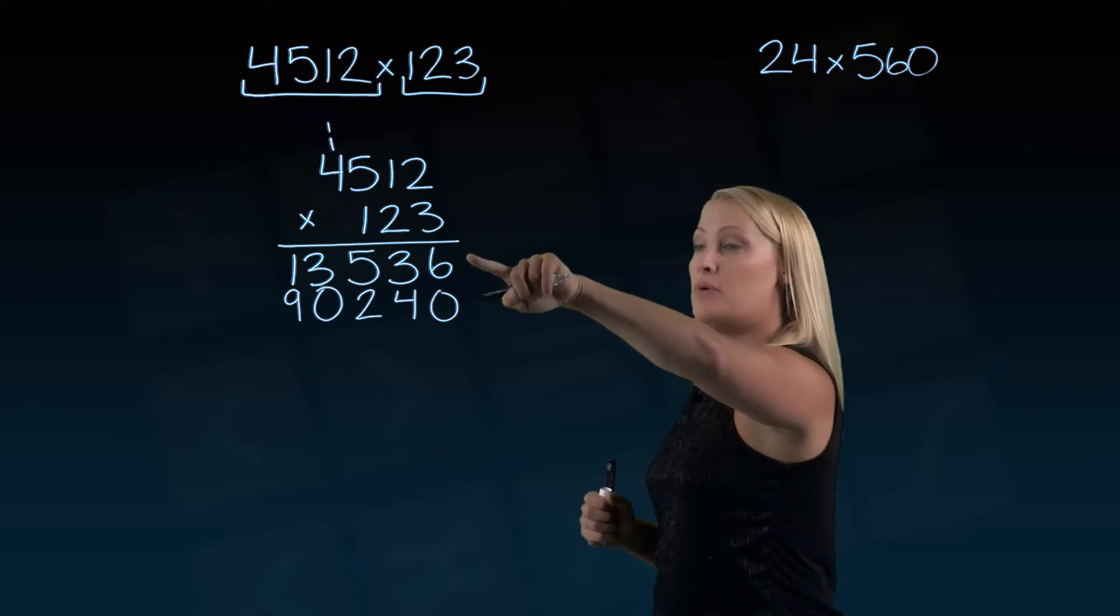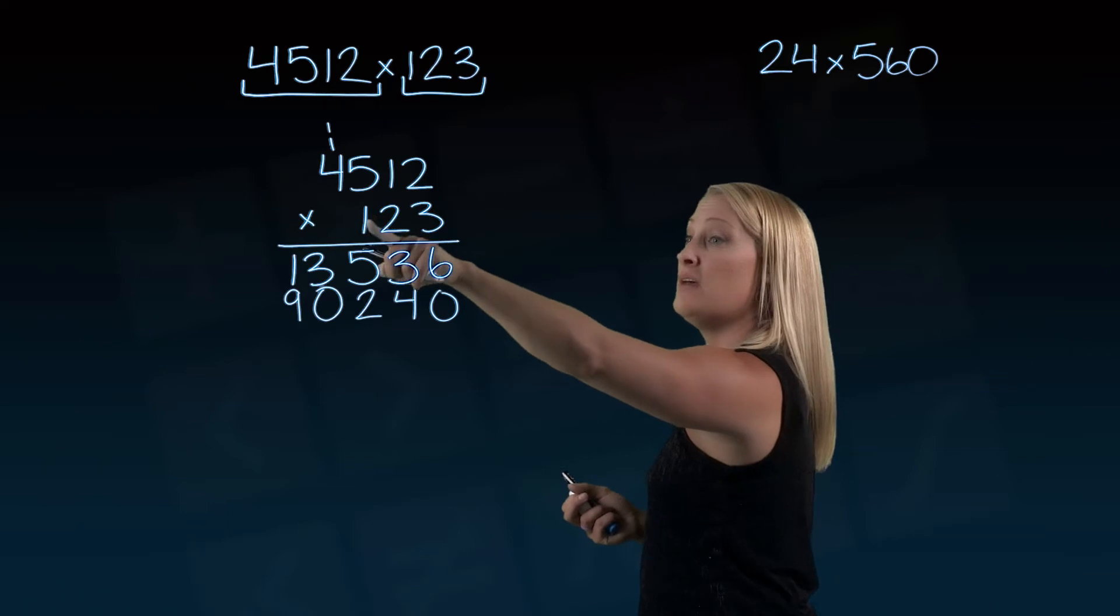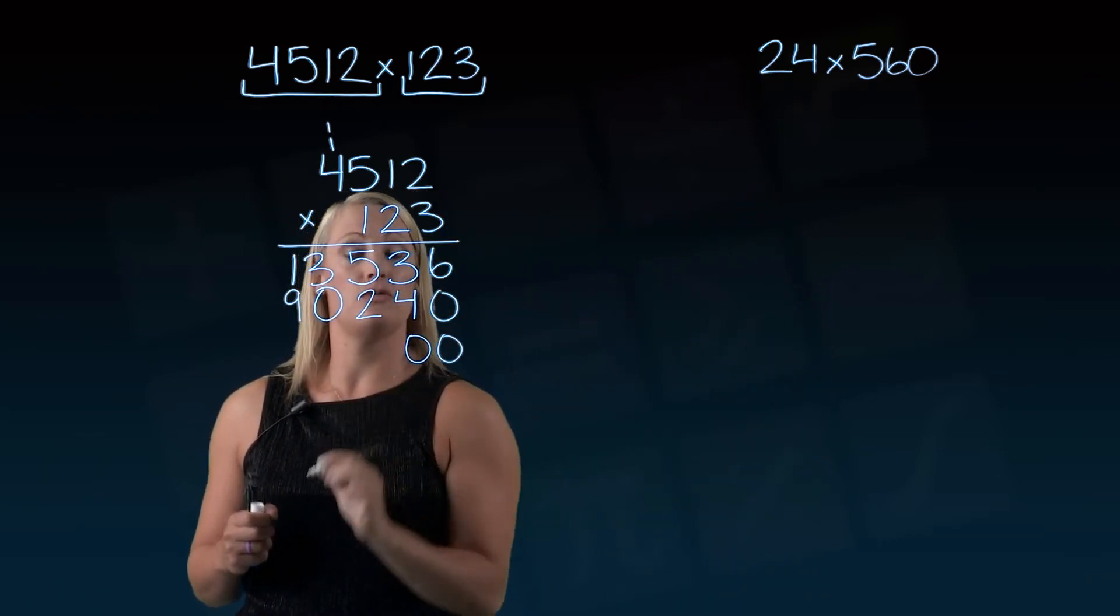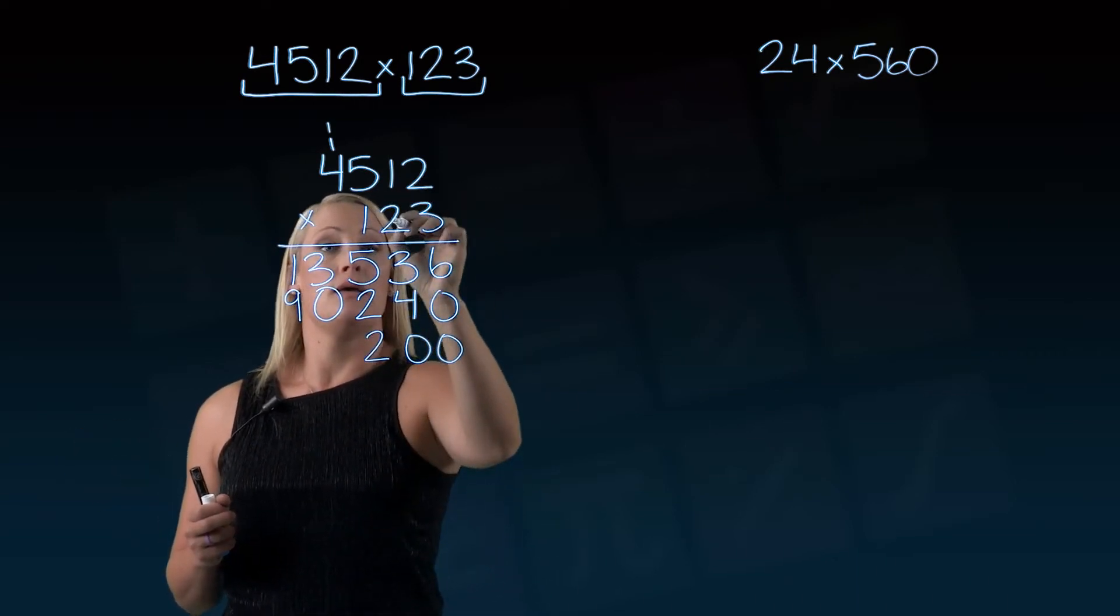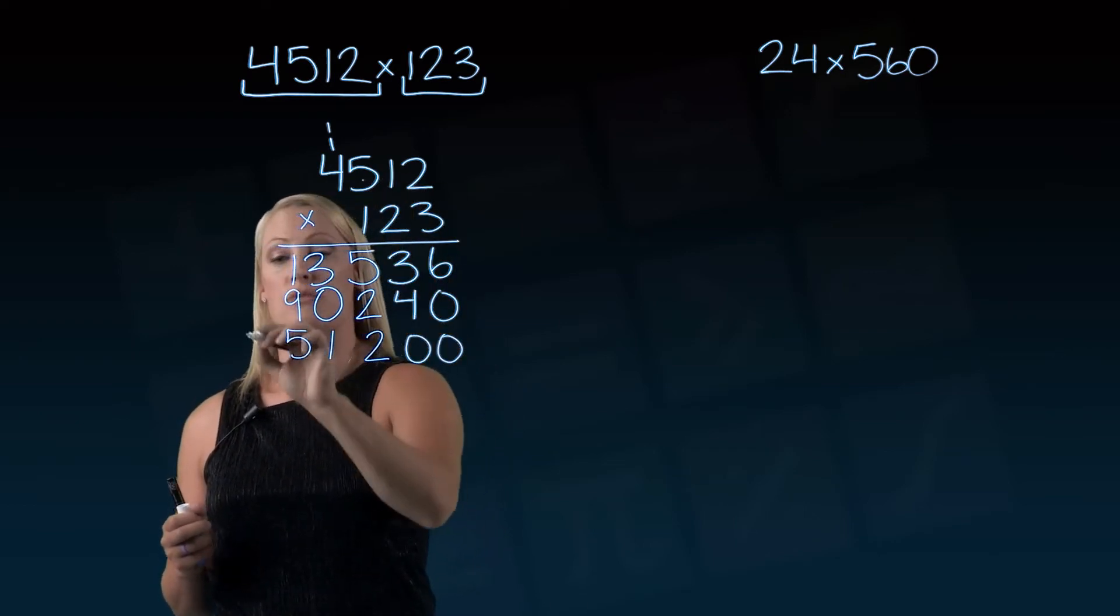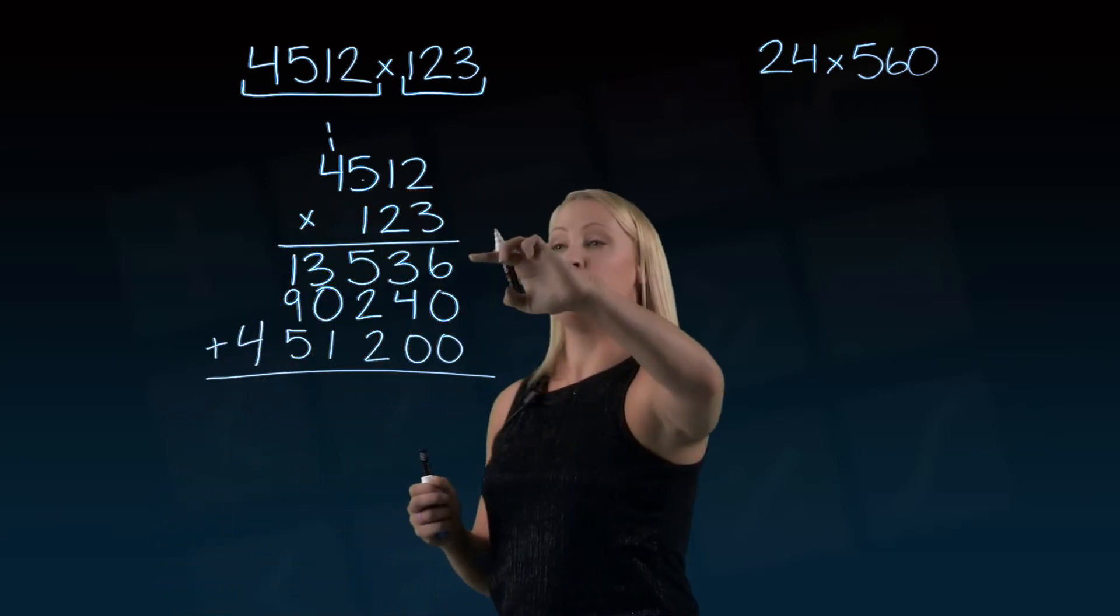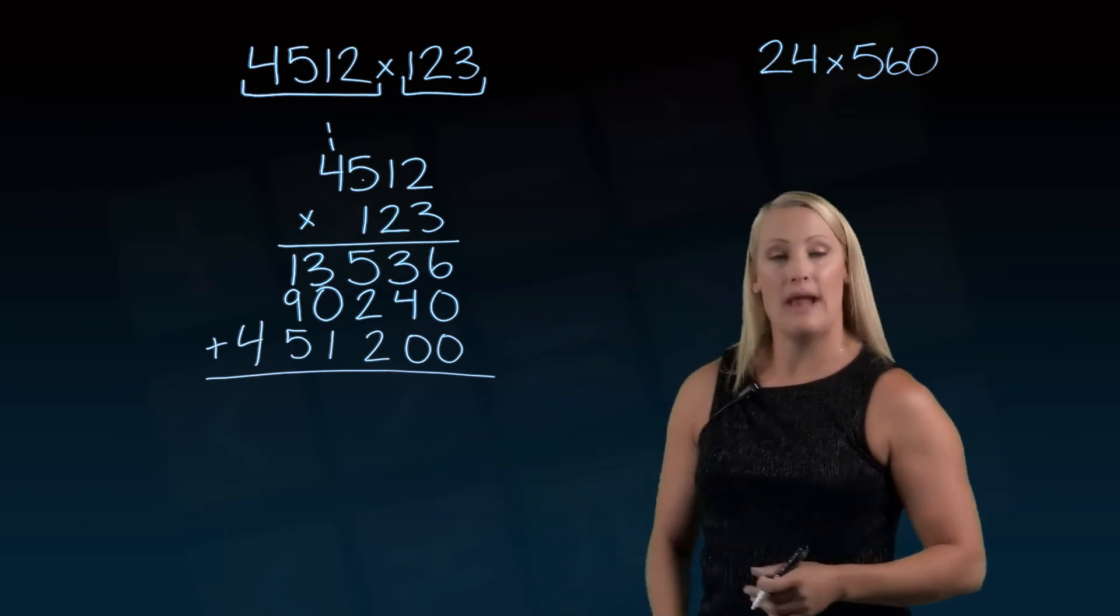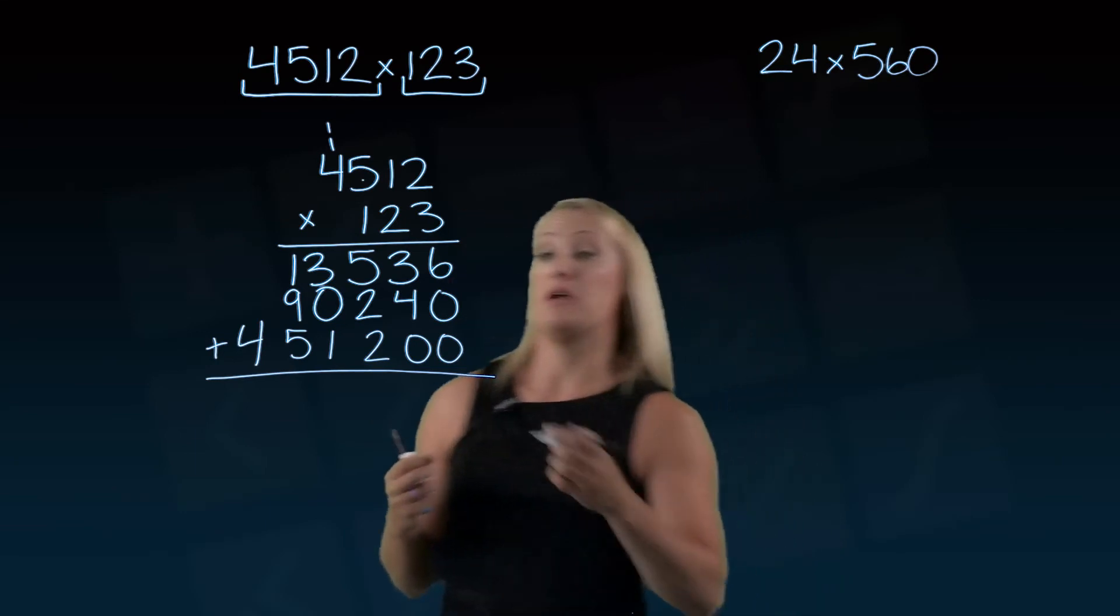We've multiplied it by 3 and by 20. For this last line, we're going to multiply by 100. Since 100 has 2 zeros, we'll put those 2 zeros down there. Then: 1 times 2 is 2, 1 times 1 is 1, 1 times 5, and 1 times 4. Now I have 4512 multiplied by 3, by 20, and by 100. Does it make sense that we would add all those three together to get our answer multiplied by 123? Let's do that.